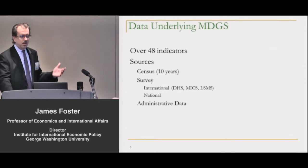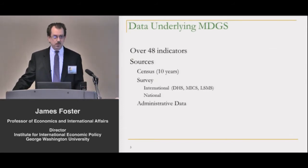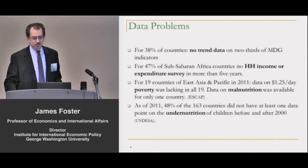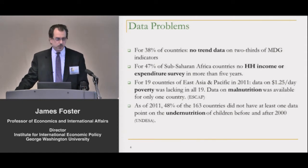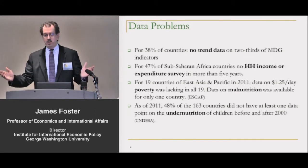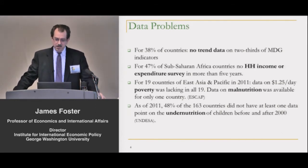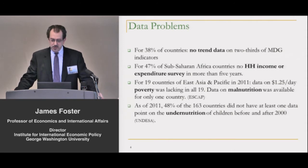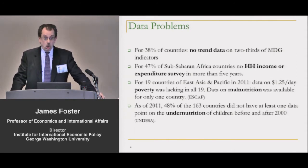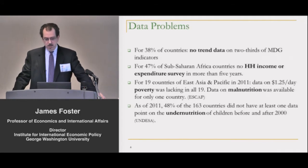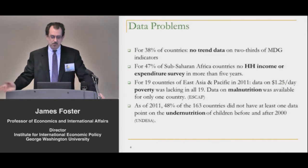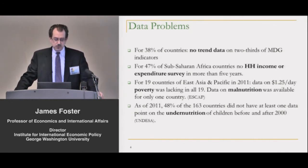We know that there are many sources of data that feed into the MDGs — census, survey, administrative data — but there are a whole lot of data problems. For over 35% of countries, there is no trend data on two-thirds of the MDG indicators. This is jarring: for almost half of sub-Saharan Africa, there's no household income or expenditure survey in more than five years. For 19 countries in East Asia and the Pacific in 2011, data on $1.25-a-day poverty was lacking in all 19. Data on malnutrition was available for just one. And as of 2011, almost half of the 163 countries did not have a data point on both sides of 2000 with respect to undernutrition of children.